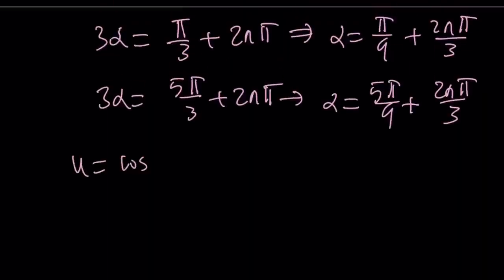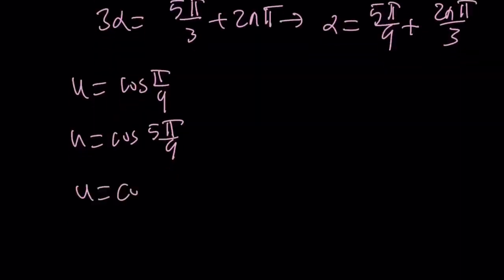u is going to be cos(π/9), or u can be cos(5π/9), or I can just add 2π/3 to this, which is 6π/9. That's going to give me 7π/9. Or we can go ahead and add the same thing here, and it's going to give me cos(11π/9).